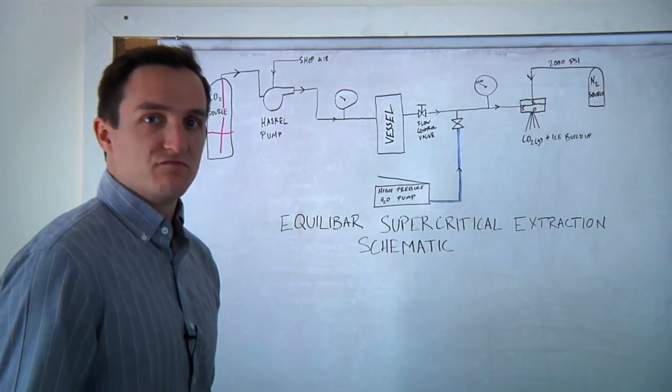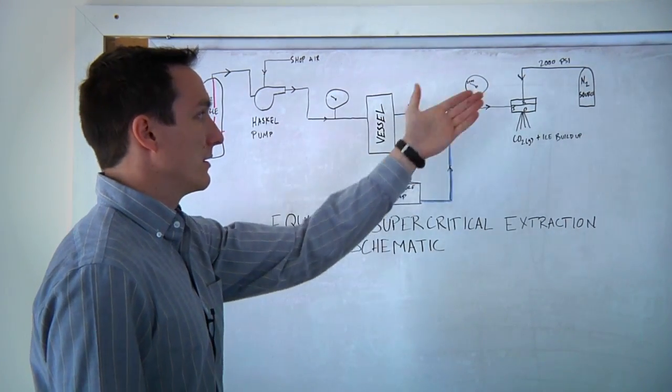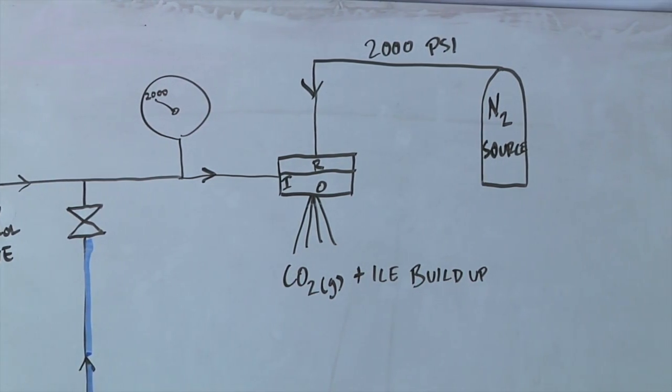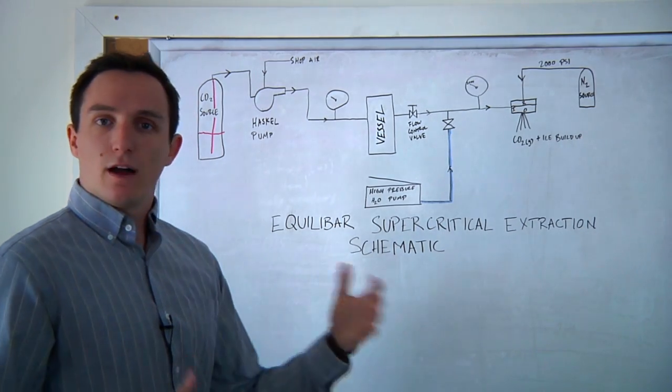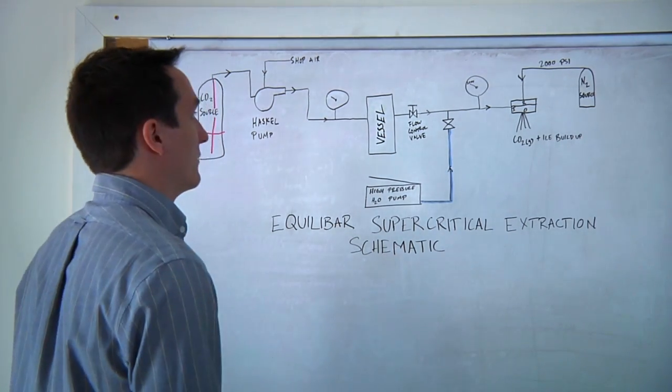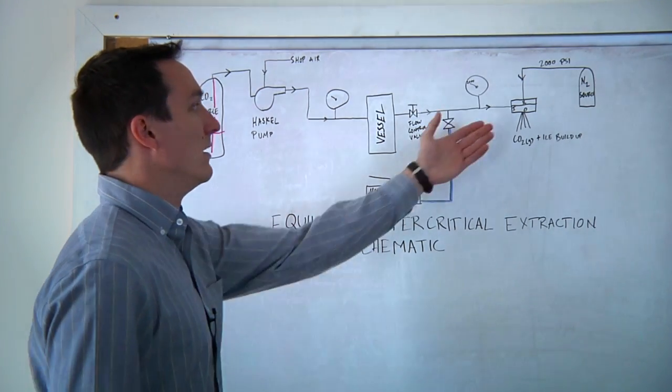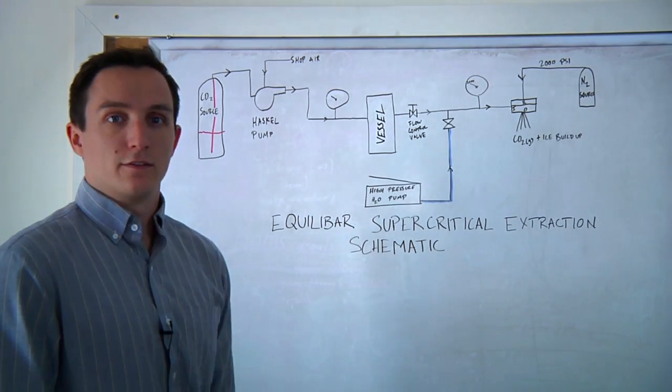Our regulator is just like any other Equilibar Research Series regulator. It has a reference port, an inlet port, and an outlet port. The reference is typically piloted by a nitrogen source, although you can use high pressure air or any sort of high pressure gas source. That's the way we typically ask you to pilot the regulator, and then the outlet, which we have several different options, which I'll outline at the end of this video.